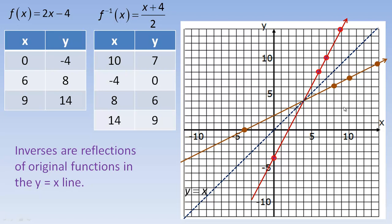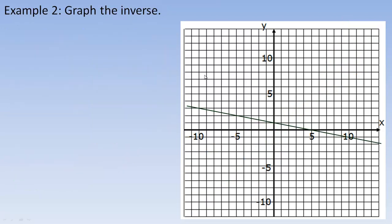All the points of a function and its inverse are reflections of each other across the y = x line. For example, the points (9, 14) and (14, 9) are reflections — the same distance away from the line on opposite sides. This gives a convenient way to graph inverses: take ordered pairs of the original function and simply switch x and y.